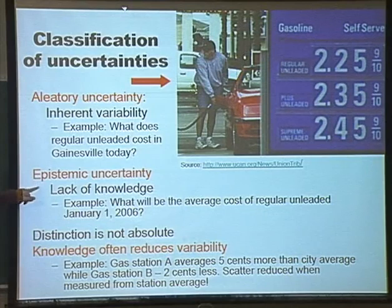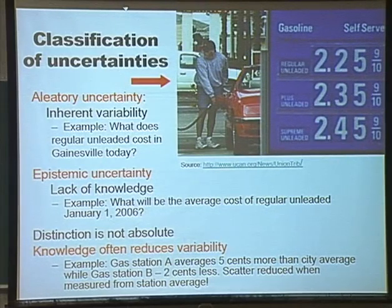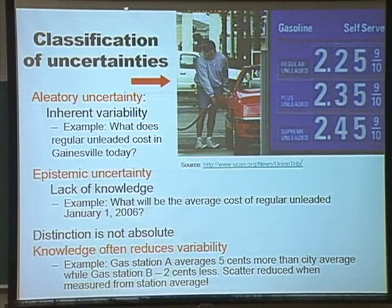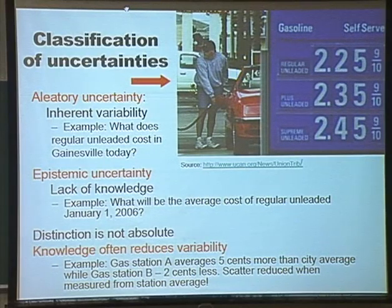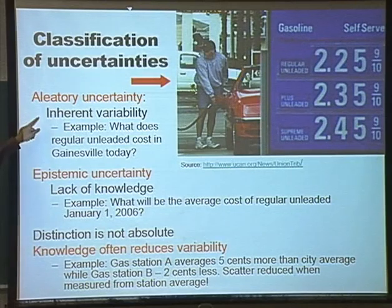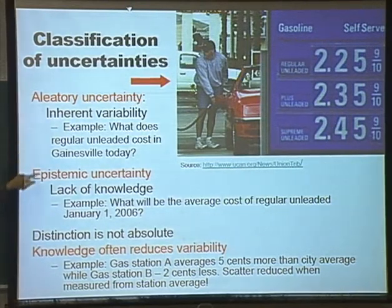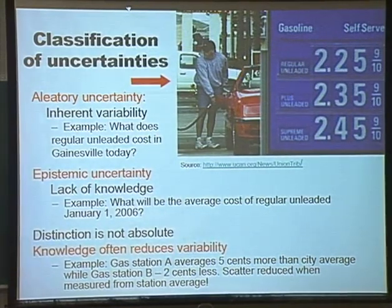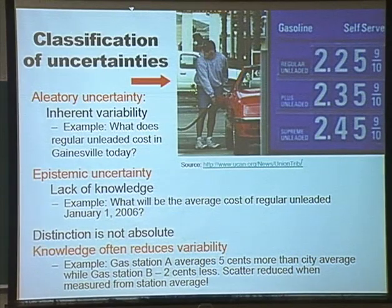Then you have epistemic uncertainty, which is essentially lack of knowledge. The example is: what would be the average cost of regular unleaded on January 1st — in about five weeks? You may tell somebody your best prediction is $2.25 plus or minus 10 cents. Notice that possibly you can give somebody the same answer to both questions, and it's very important to note that there is a difference between the two.